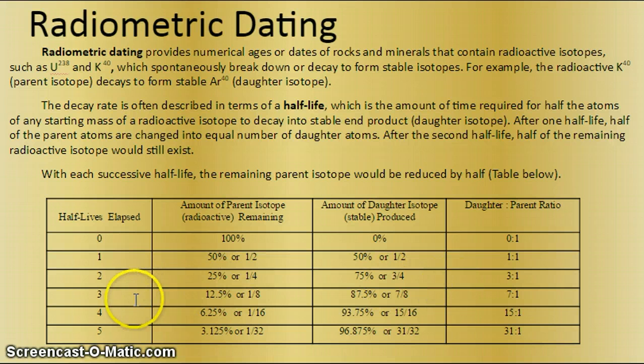And if it goes through yet another half-life, through the third half-life, the ratio would be one half of 25%. So it would be 12.5% to 87.5%, or essentially it would be seven parts daughter to one part parent. So this is the process that we're going to be learning. This is called radiometric dating.